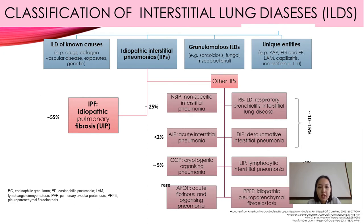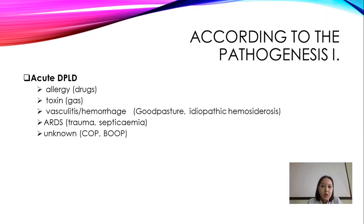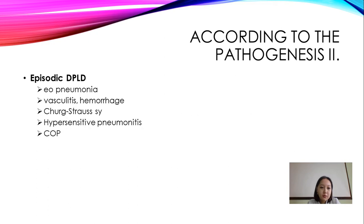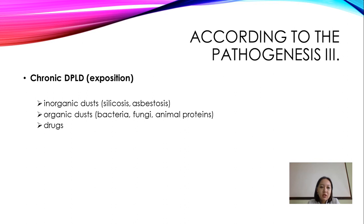We have several causes of interstitial lung diseases. Acute causes include allergy, drugs, toxins, vasculitis, hemorrhage, and ARDS (acute respiratory distress syndrome). Episodic causes include eosinophil pneumonia, vasculitis, hemorrhage, Churg-Strauss syndrome, hypersensitivity pneumonitis, and COP. Chronic causes include organic dust, systemic disease, and asbestosis — including bacteria, fungi, animal proteins, and drugs.